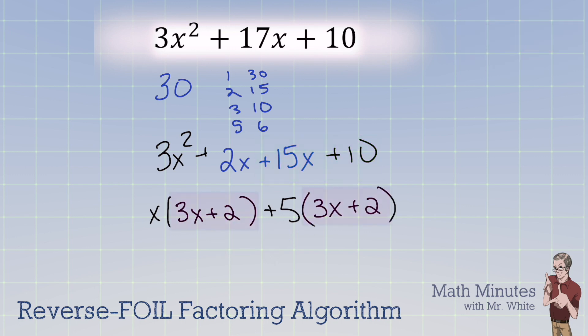Well, look at that. They have the same binomial. It's called a common binomial. So you can factor that out and write it one time right here. And then in a second set of parentheses, you write what's left behind. It was the x and the positive 5.